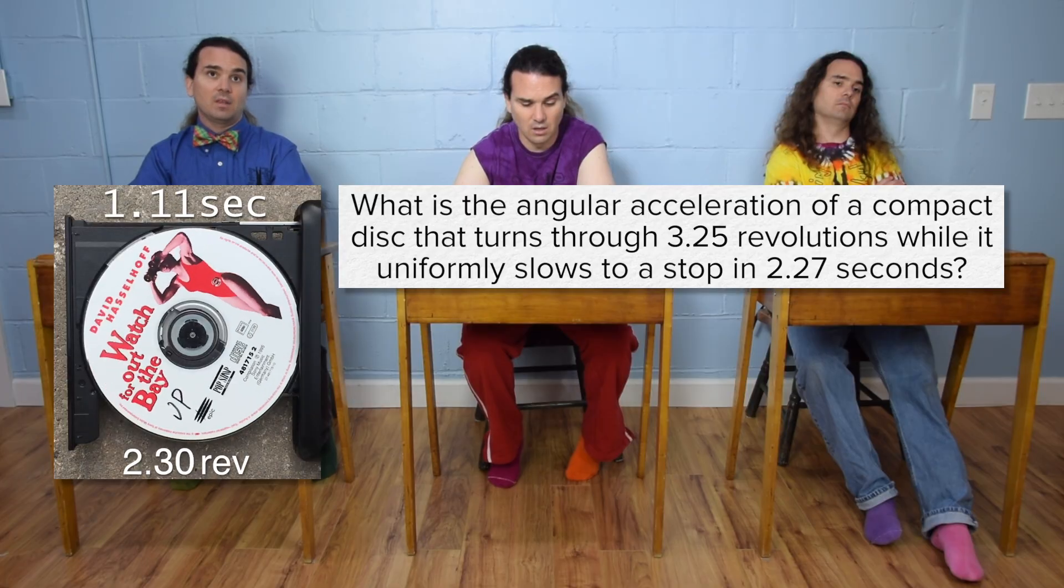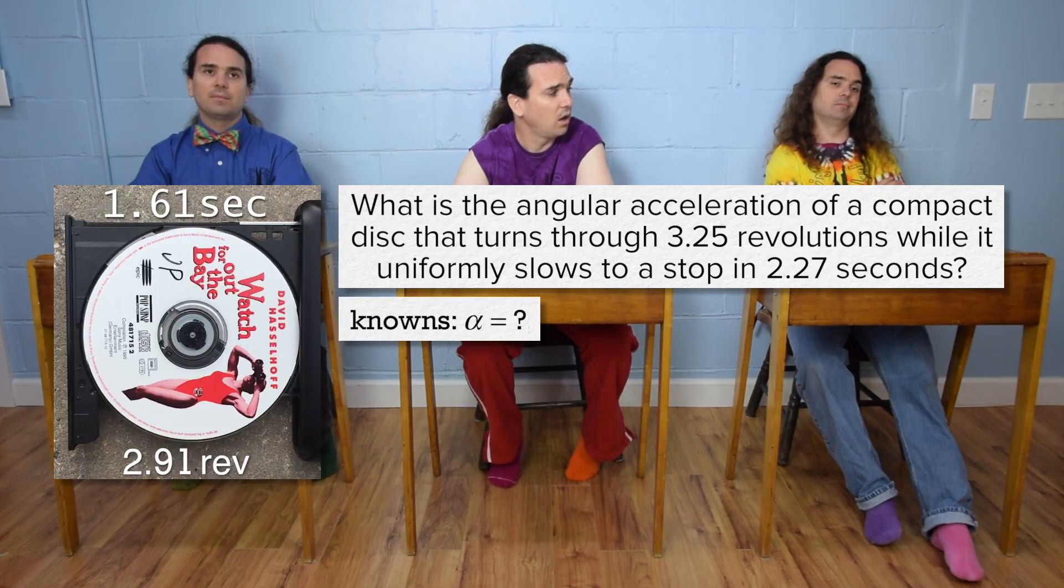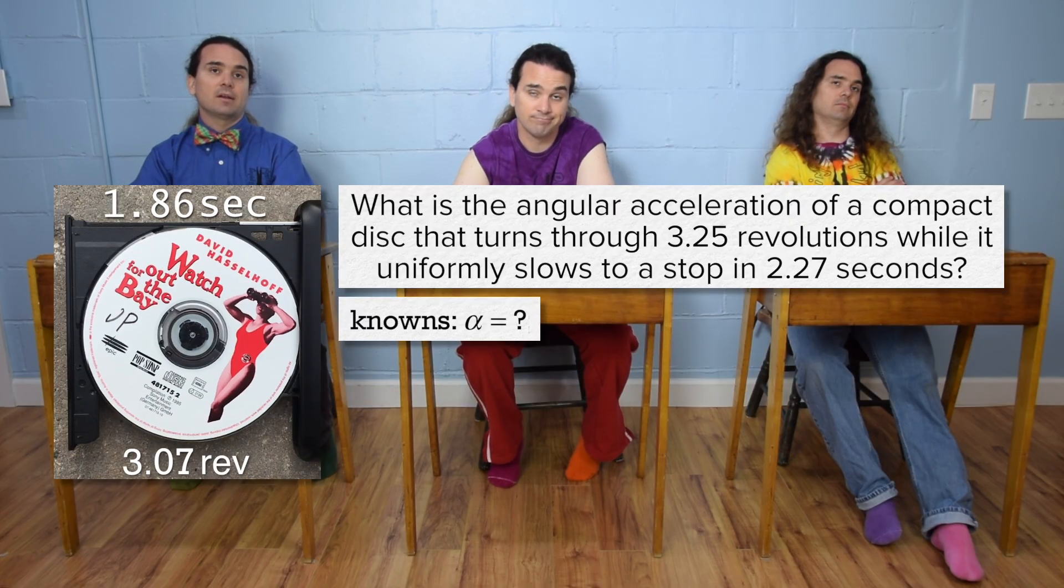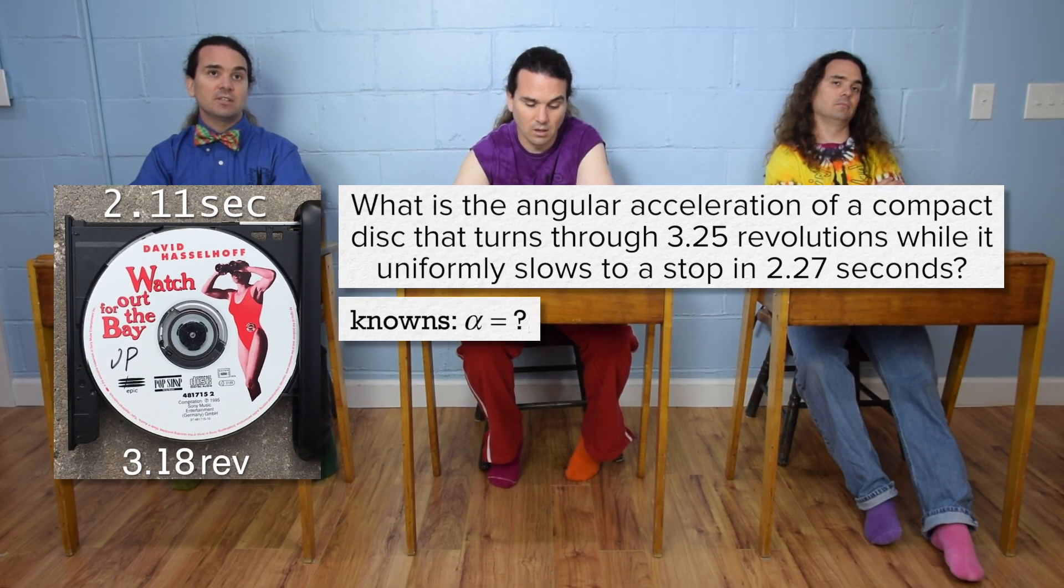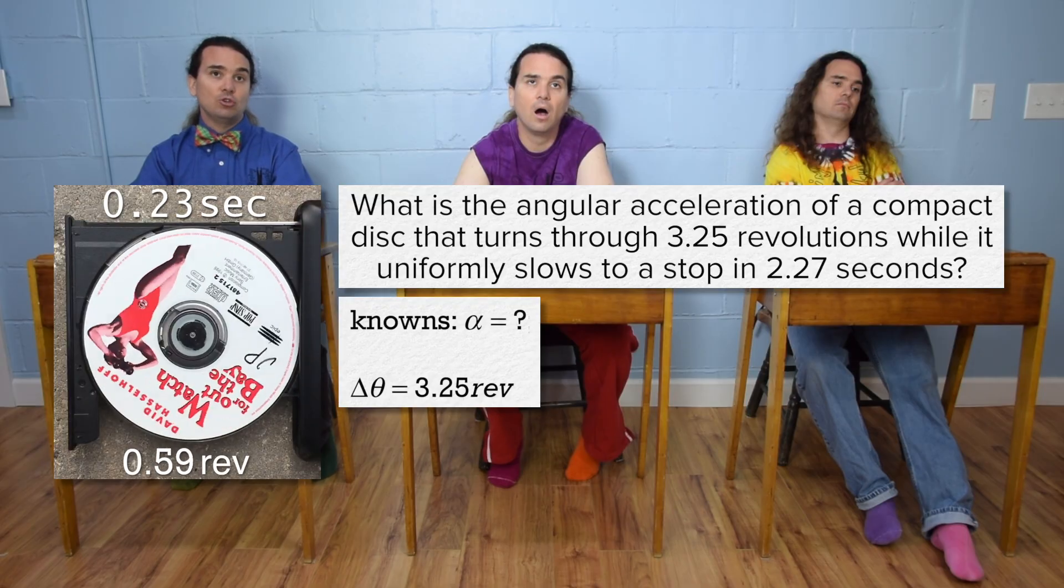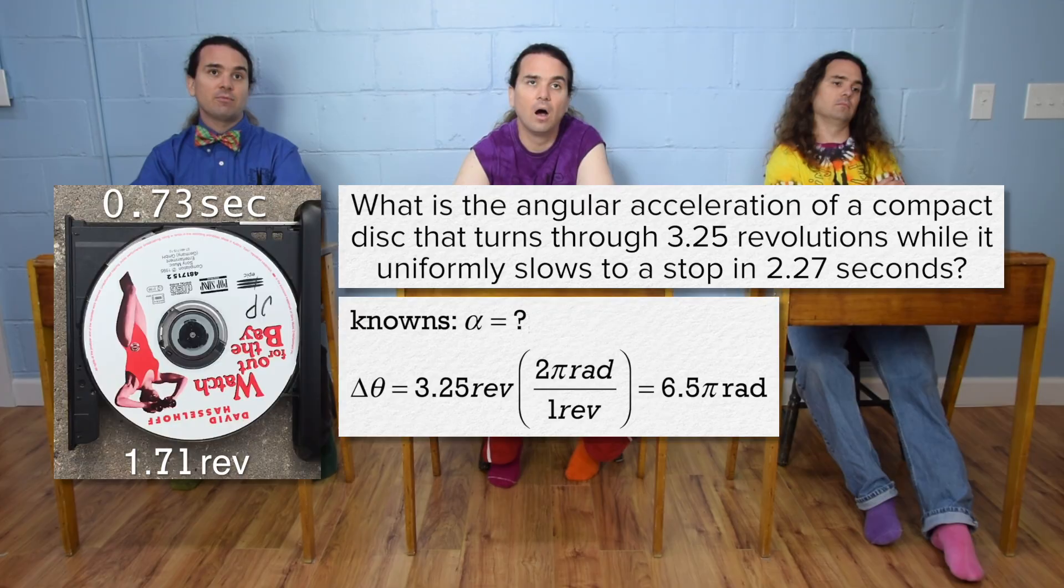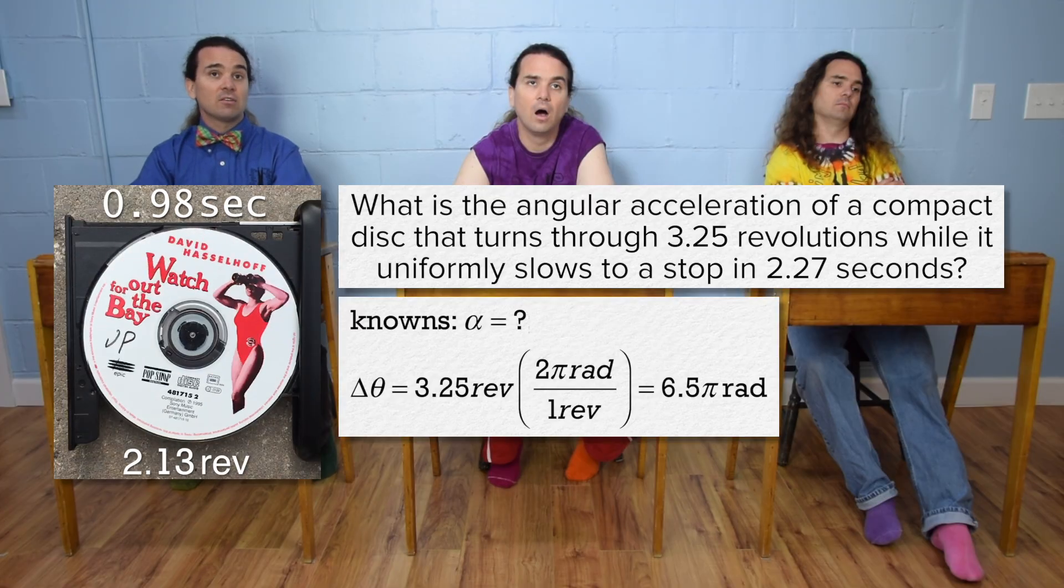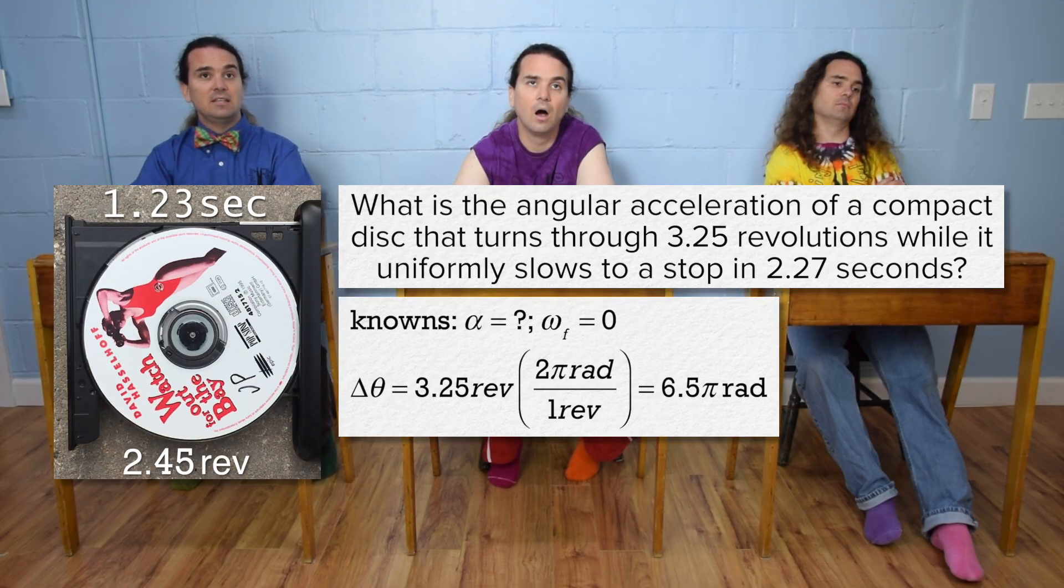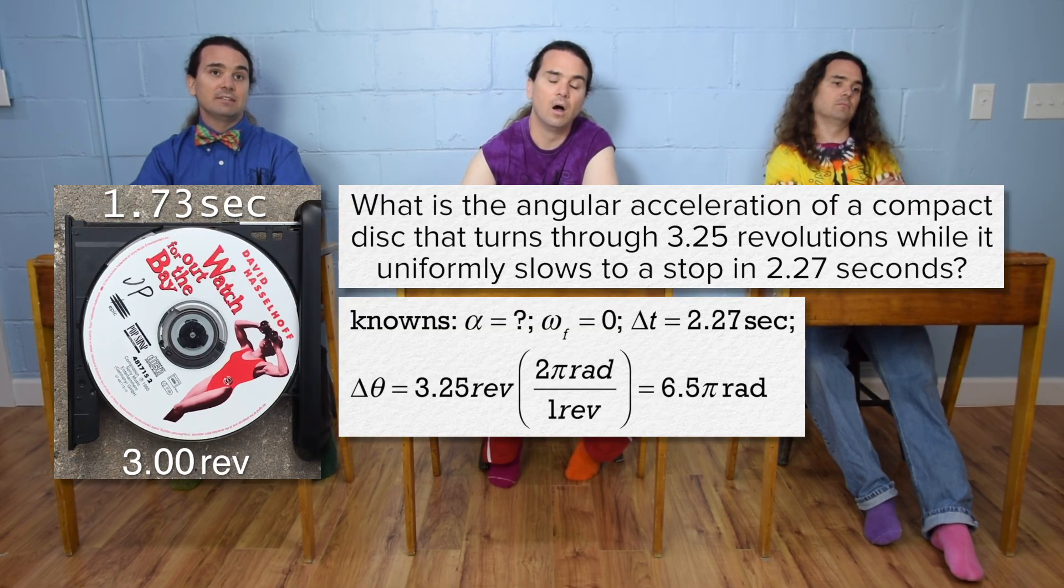Okay, angular acceleration or fishy thing alpha equals question mark. Change in angular position is 3.25 revolutions. However, we need to convert that to radians, so multiply by 2 pi radians over 1 revolution to get 6.5 pi radians. Angular velocity final is zero because the CD stops and change in time is 2.27 seconds.